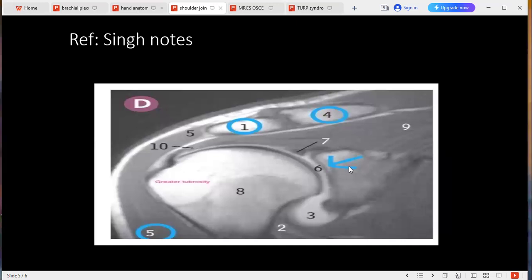Yes, supraspinatus tendon impingement could be there. How would that present if there is impingement of the shoulder joint? The patient will be unable to abduct the arm in first 15 degrees. All right, which muscles are responsible for the abduction of first 15 degrees? In first 15 degrees it is the supraspinatus muscle, and then after 15 to 90 degrees it is the deltoid muscle, and then after 90 to 120 it is the trapezius muscle and serratus. Yes, good. Okay, thank you.